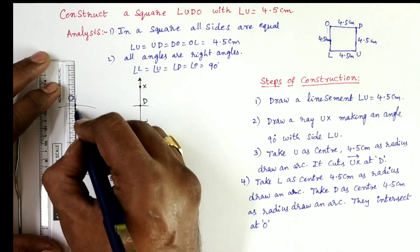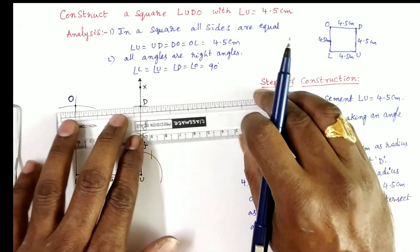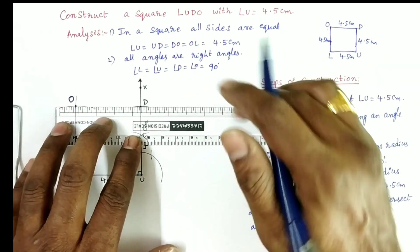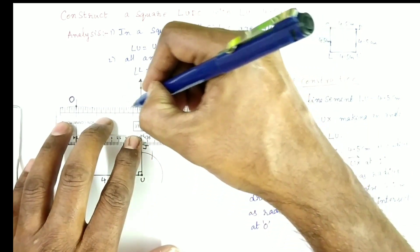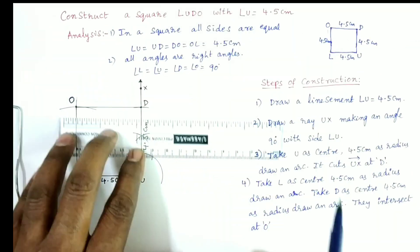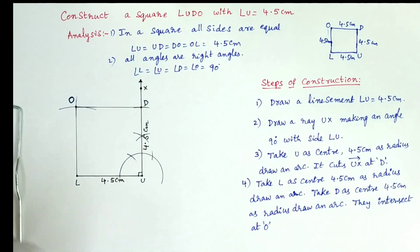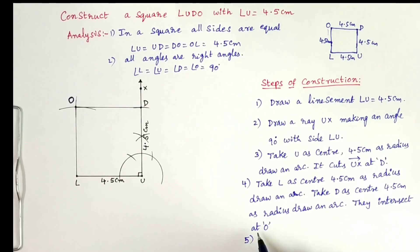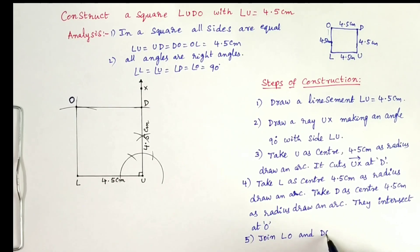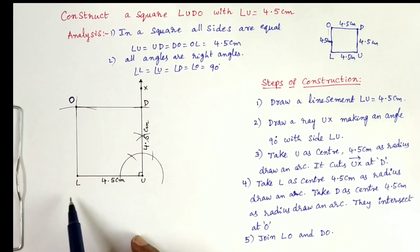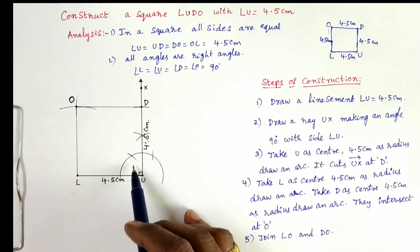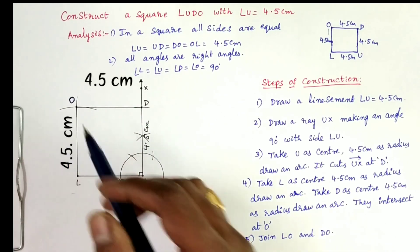Next, join LO and join DO. Therefore, the required square LUDO is constructed.